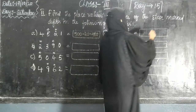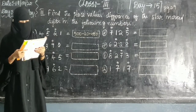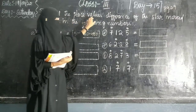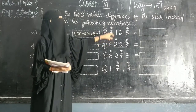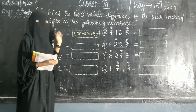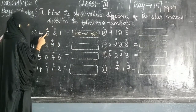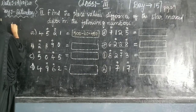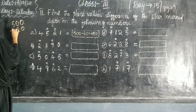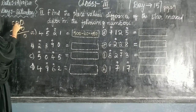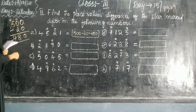Page number 29, question — find the place value difference of the starred digit in the following number. The first one is done for you. Star mark digit is 5. The place value is 100. So we write 5 into 100 equals 500. Minus the face value: 5 in the 10s means 5 into 10 equals 50. 500 minus 50 — we cannot subtract 0 from 0, so take a borrow from 100. 10 minus 2 equals 8. The answer is 480.